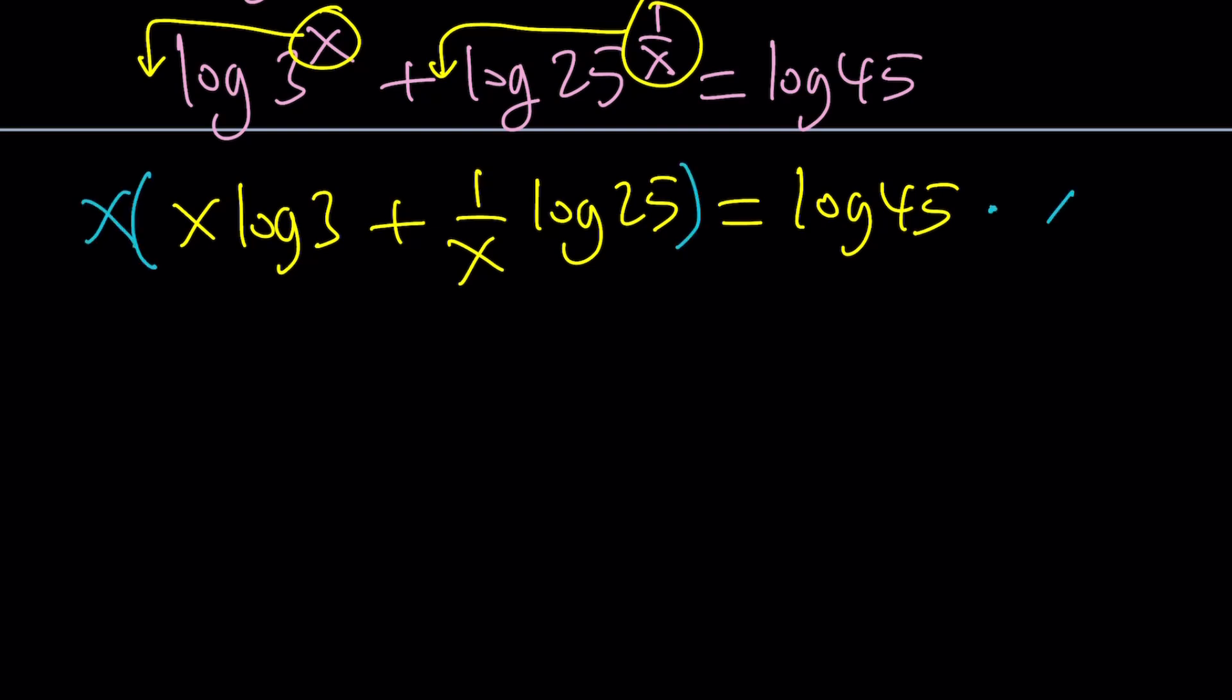That's actually going to turn this into quadratic: x squared log 3. X cancels out with 1 over x plus log 25 equals x log 45. Awesome. Why is this quadratic? Because it's quadratic in x squared. Everything else is a constant. Notice that. So we have an x squared, we have an x, and we have a constant term.